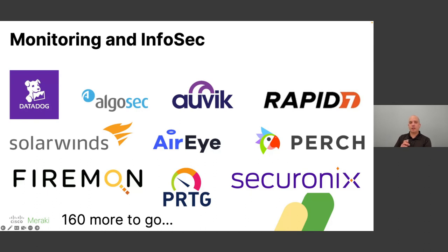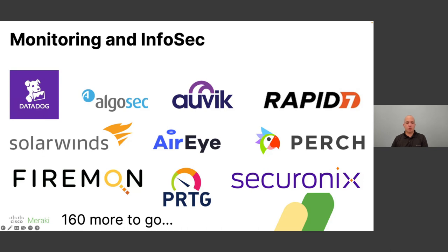AlgoSec is a different solution — it works with Meraki MX firewalls, Cisco firewalls, and third-party firewalls, analyzing the security policy on those firewalls to help you identify threats, identify vulnerabilities in the existing rule base, recommend optimizations, and help you transition from one firewall to another by translating rules. It integrates with the Meraki API to analyze Meraki MX firewall rules. Rapid7 handles vulnerability assessment, SolarWinds handles monitoring, Perch security, AirEye is a startup for wireless network security monitoring, and PRTG is a monitoring solution — many more solutions are available at apps.meraki.io.